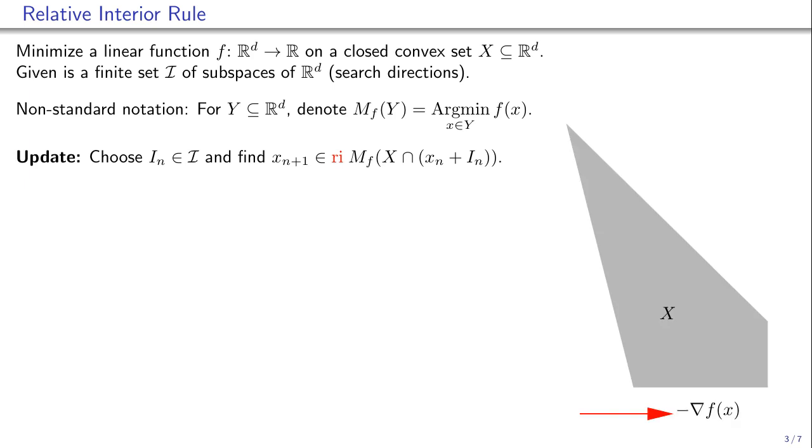Why is this a good idea? Suppose we minimize the linear function on this polygon. The function is constant vertically and decreases to the right. We use coordinate descent which alternates between the horizontal and vertical directions.